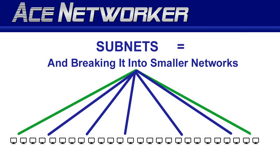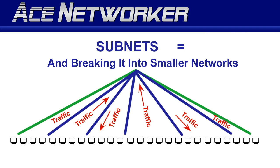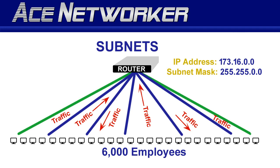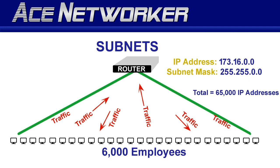Subnetting is the method of breaking down a large network into smaller networks, and it's done to make your network more manageable and more efficient. For example, if you have a company with 6,000 employees, your ISP assigns you a Class B IP address with a default subnet mask, which allows approximately 65,000 usable IP addresses. You could put all employees in one large network — fine for a small business — but with 6,000 computers, this creates serious traffic issues from broadcasts, collisions, and bottlenecks over a single connection.